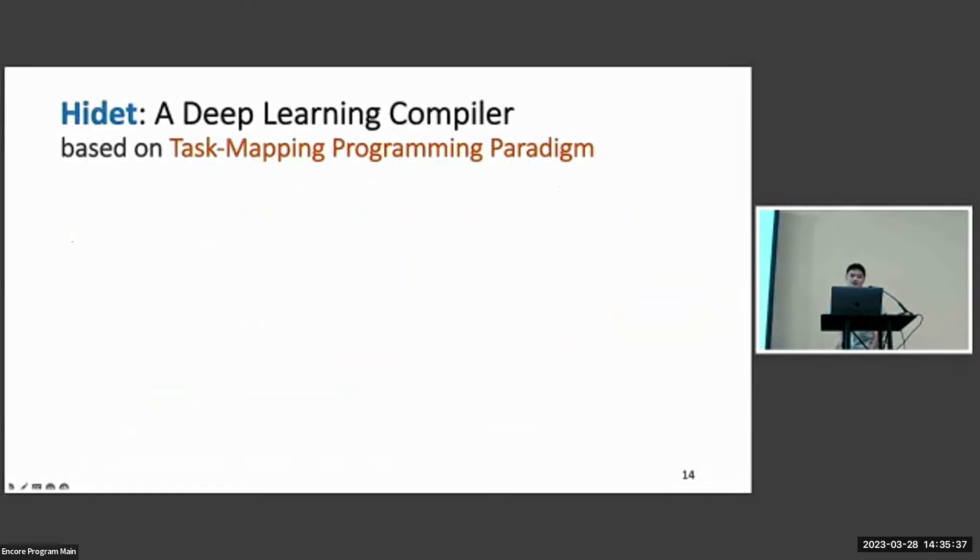We implemented a new deep learning compiler called Hidet from this idea. There are two intermediate representations here, the computation graph IR and the tensor program IR.